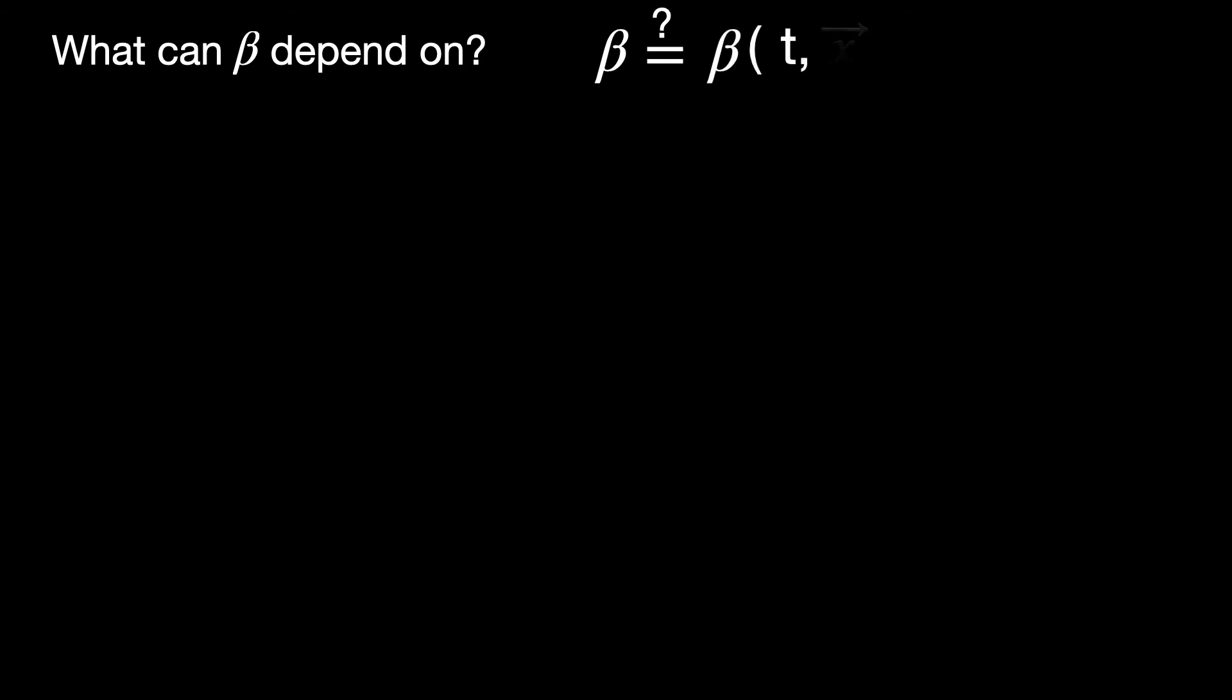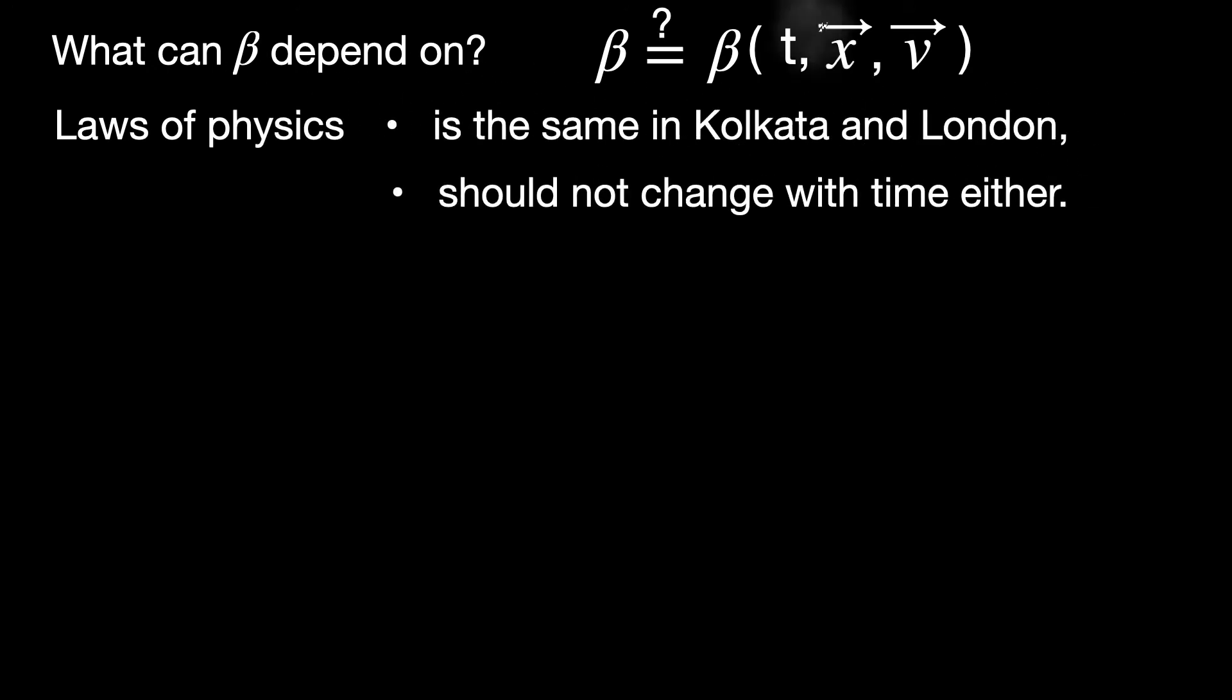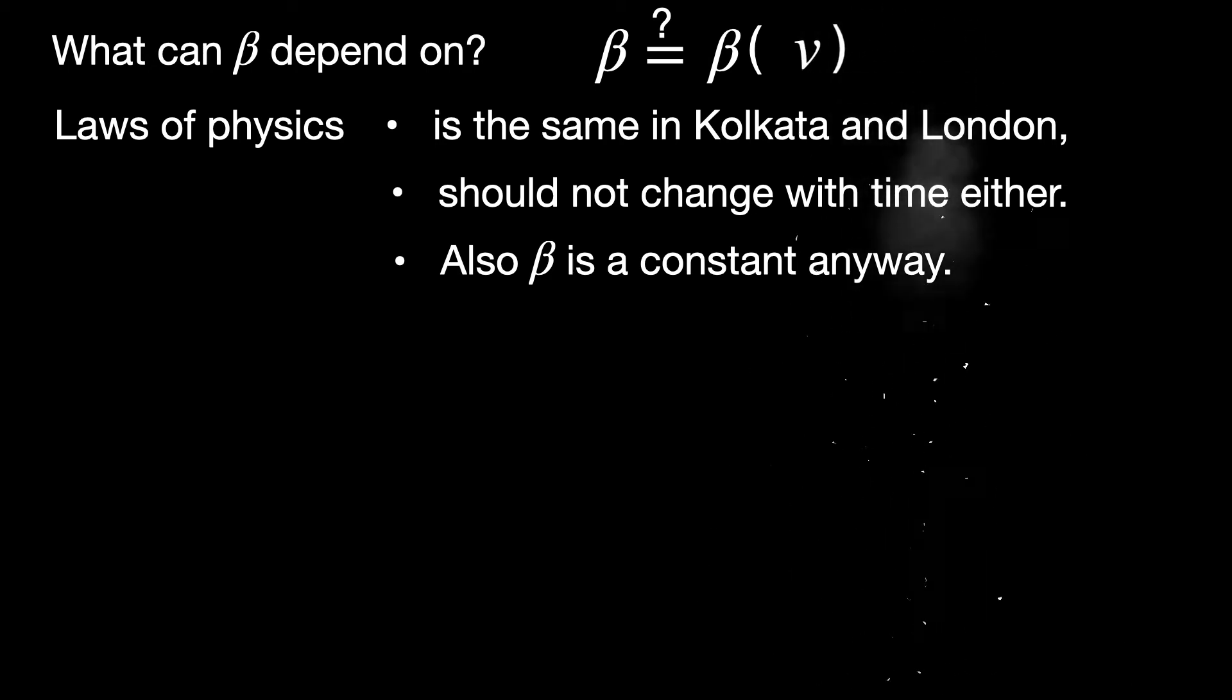To fix beta we need to think what are the relevant quantities it can depend on. So, time, space and velocity are the only options here. I mean these are the only physical quantities that are there in our theory so far. Now, we expect things to be the same in Kolkata and London today and tomorrow at least in physics. So, spacetime coordinate dependence is ruled out. Besides, being a constant beta cannot depend on the space or time coordinate. The only possible quantity that should determine beta is the constant relative velocity between the two inertial frames S1 and S2. Further, we do not expect the direction of the relative velocity to come into the picture here because spacetime interval is a scalar and should look the same irrespective of which direction we are looking at or looking from. So, only the magnitude of the relative velocity can affect beta not its direction.